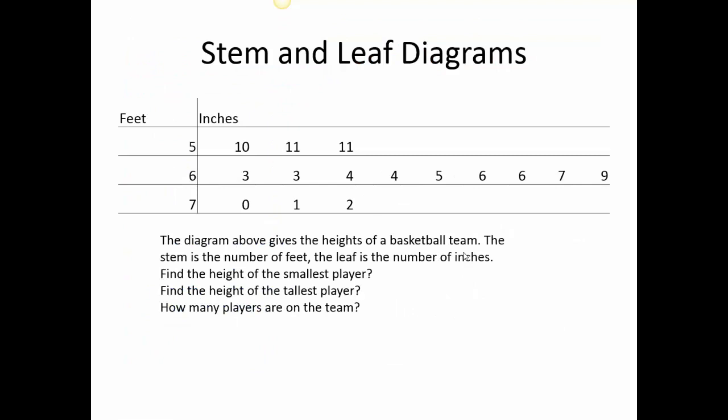So in this next one, I wanted to do another stem and leaf, and I just wanted to show you a different stem with a different leaf. And so here I took the height of basketball players. So the stem is the number of feet tall the basketball player is, and then the leaf is the number of inches. So here's what I want you to do in this one. I want you to find the height of the smallest player. I want to find the height of the tallest player, and then tell me how many players are on the team.